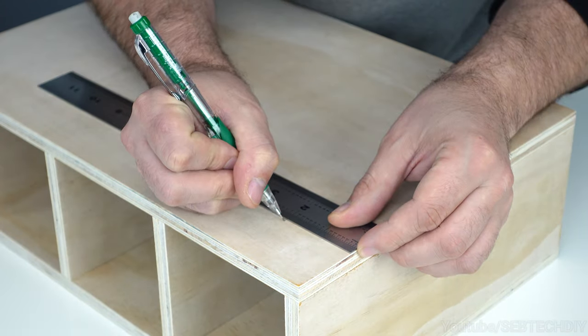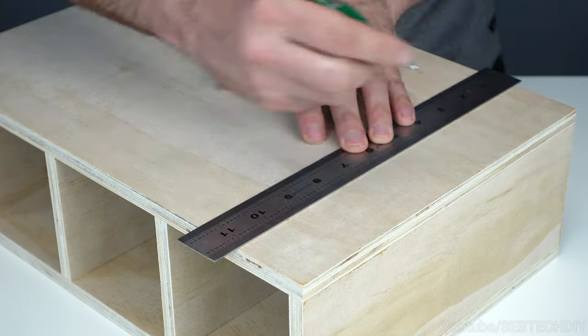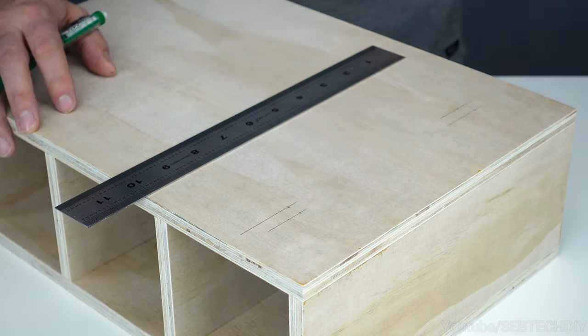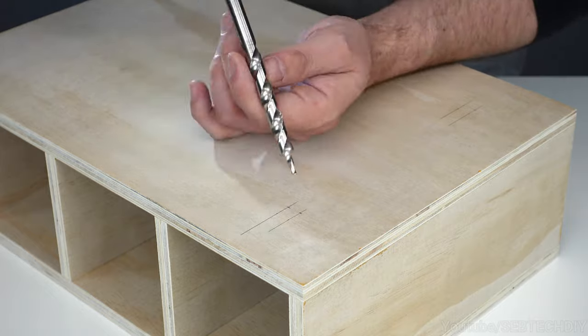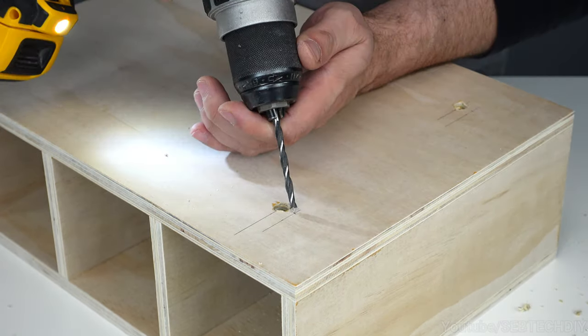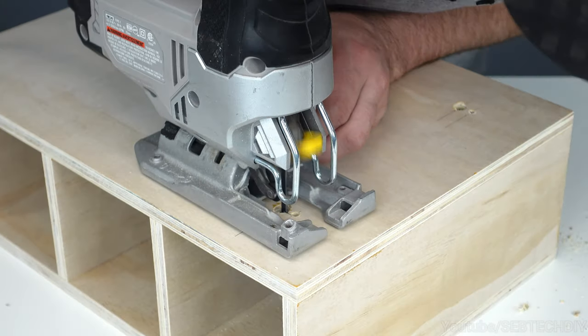I start by marking the location of my holes. I will drill four holes using two different drill bit sizes. We will make what we call keyholes - it's a super simple way to hang stuff on the wall. The bottom holes are bigger than the top ones. Then using my jigsaw, I remove the wood between both holes.